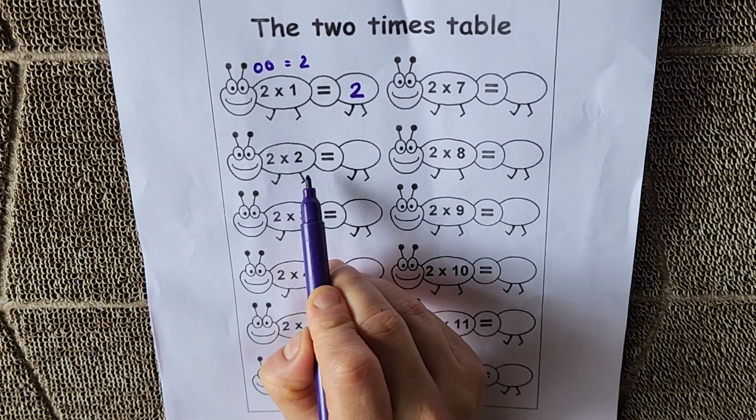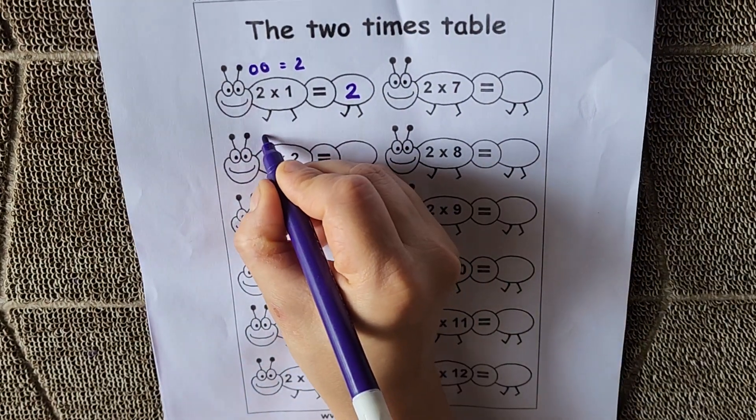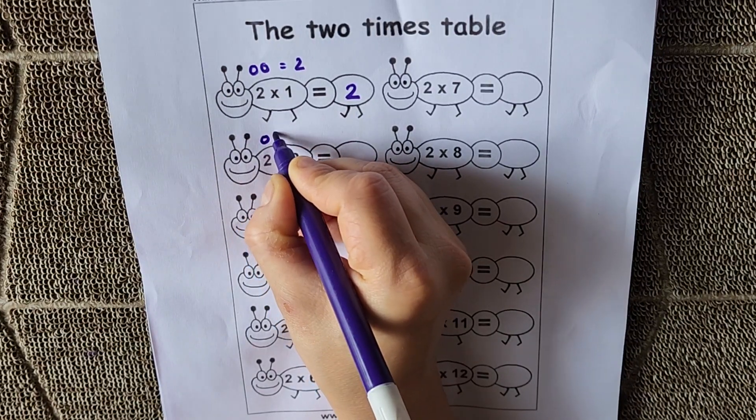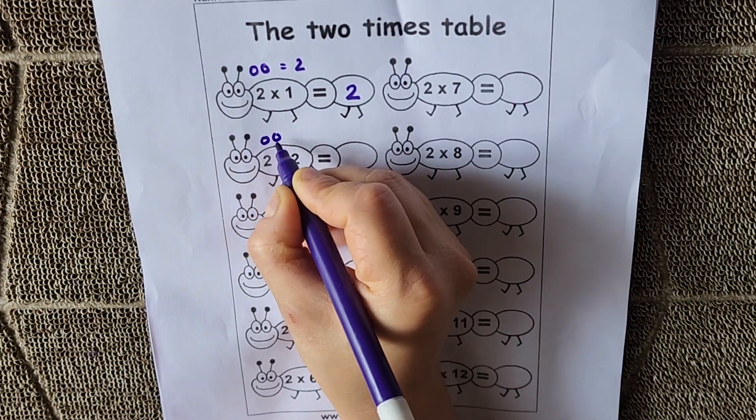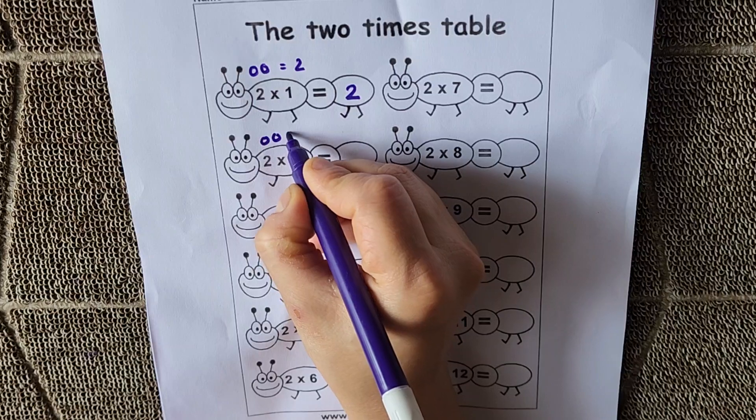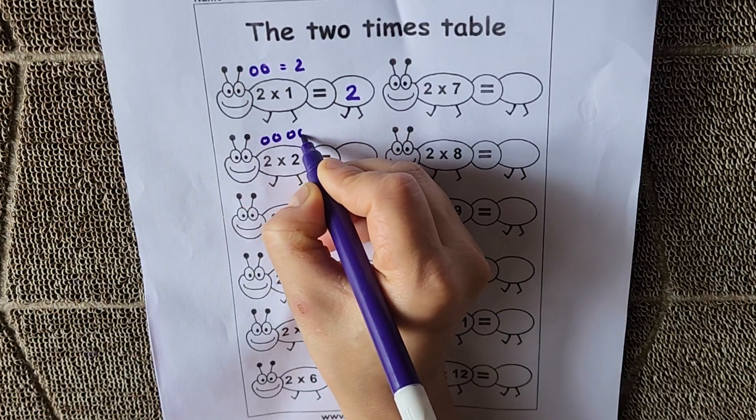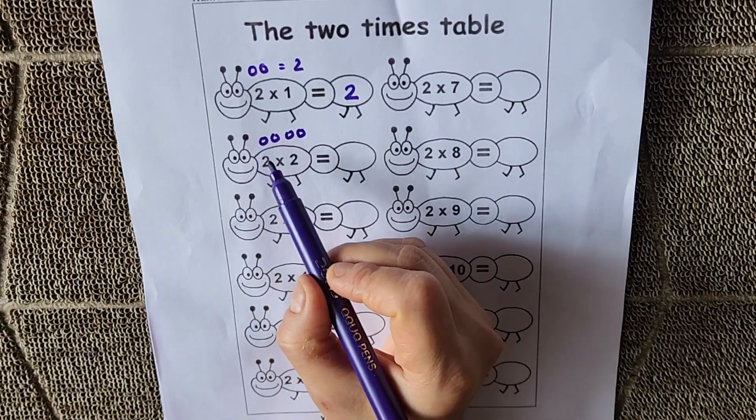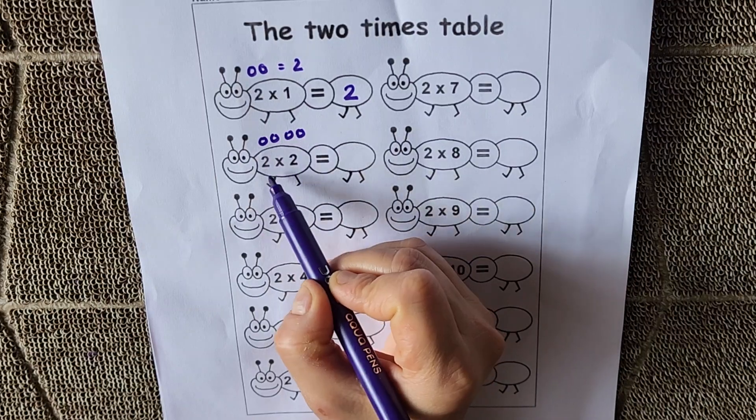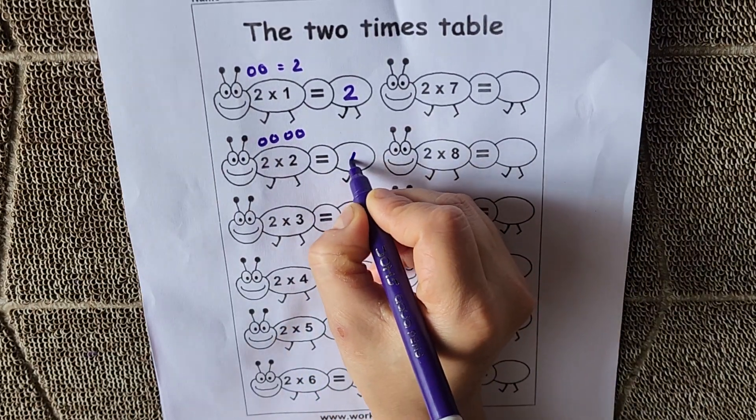Next, 2 into 2 means 2 balls 2 times. Ek 1 time hum ne yaha pe draw ki hai. Ab 1 time or karenge hum. So total number of balls are 1, 2, 3, 4. So 2 2s are 4.